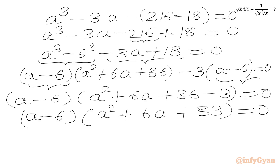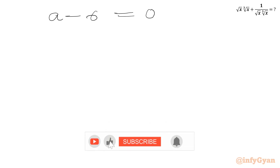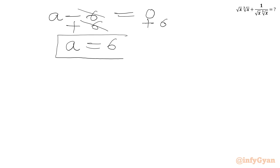Using the zero product rule, either a - 6 = 0 or a² + 6a + 33 = 0. From the first equation, adding 6 to both sides gives a = 6 as our first real value.